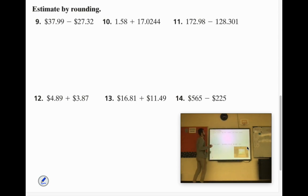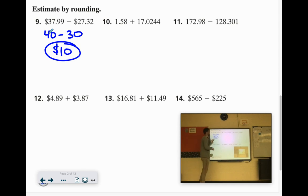So like if I was doing 9, I would call that $40 minus $30, which would be about $10. But maybe you used 38 and 28 and came up with 10. Or maybe you came up with 12 or 11. If it's close, we're looking for an estimation here.